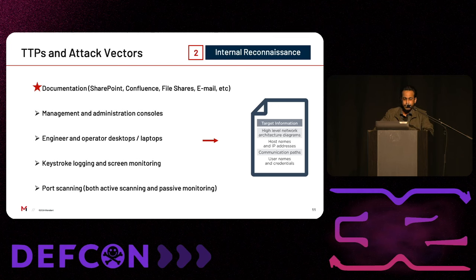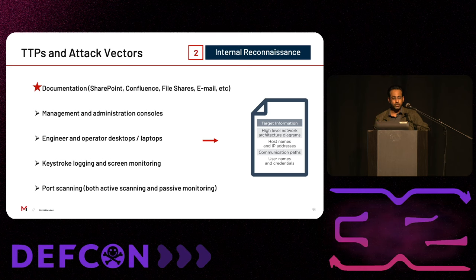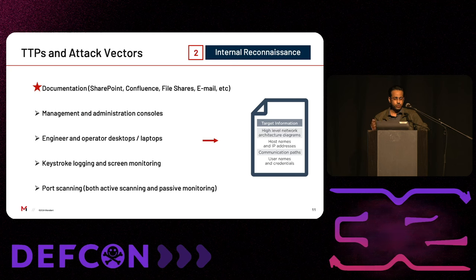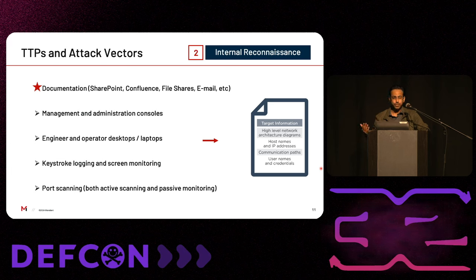The next phase is internal reconnaissance. The objective is to leverage the foothold gained in the previous phase to extract specific information about the target system. The enterprise network is important not only from the perspective of IT-OT network segmentation but also from the perspective of data segmentation. A typical enterprise network hosts multiple sources that can provide an attacker with critical information, including documentation, department file shares, email communications, development resources, management consoles, and even keylogging and screen monitoring. Target information an attacker typically seeks includes network diagrams, host names, IP addresses, process documentation, operator manuals, and plain-text credentials.